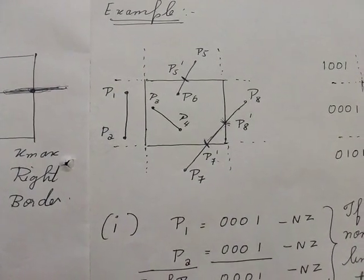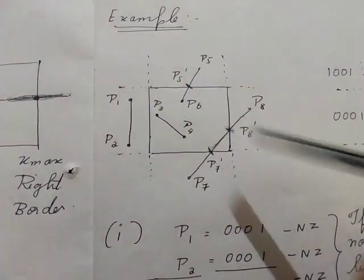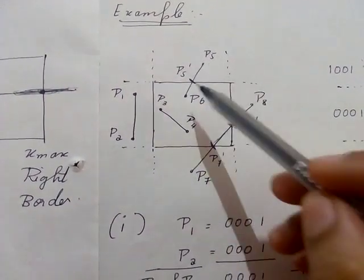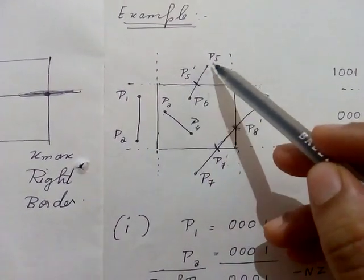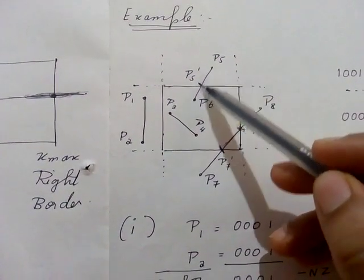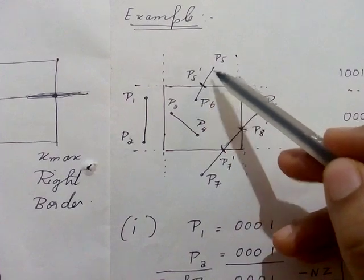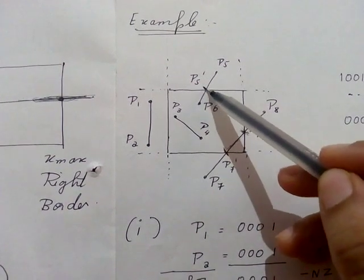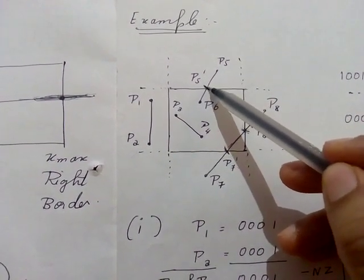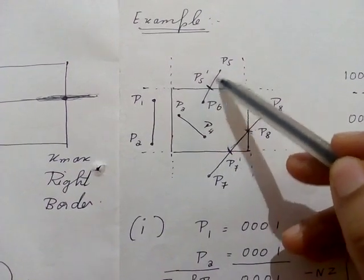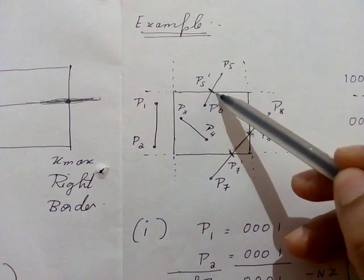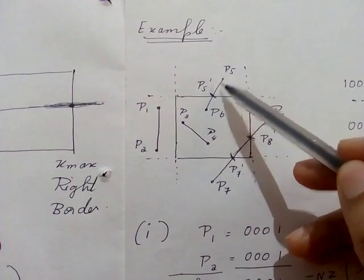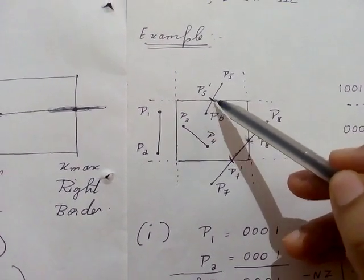In the last video of the Cohen-Sutherland line clipping algorithm, we saw an example where some lines are partial — half inside the window and half outside. We decided that we will take the intersection point of those lines with the window edges. The part inside will be displayed and the other will be clipped off. So we need some formulas to find these intersection points.